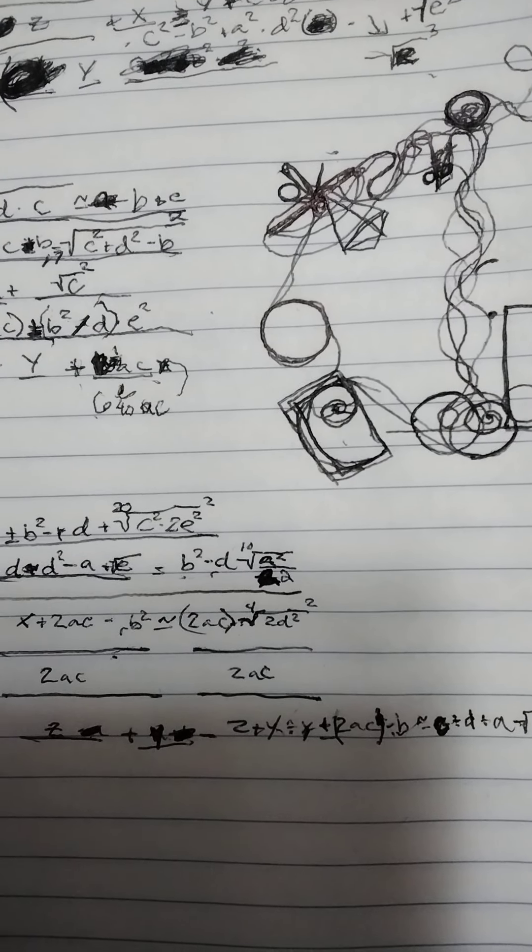Plus or minus 2ac minus b congruent to c divided by d plus a square root e squared.